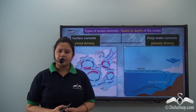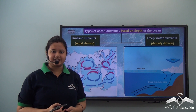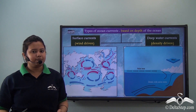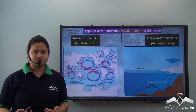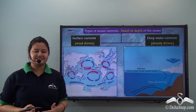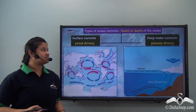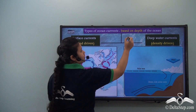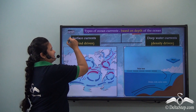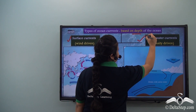The behaviour of ocean currents is not the same at the surface and at the depth of water bodies. Therefore, ocean currents can be divided into two categories based on depth: surface currents and deep water currents.